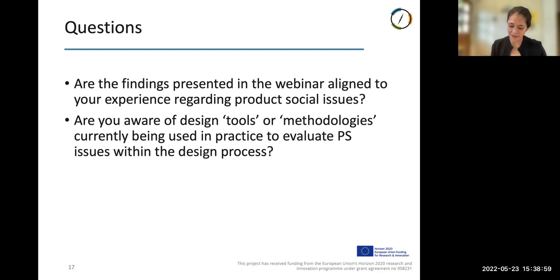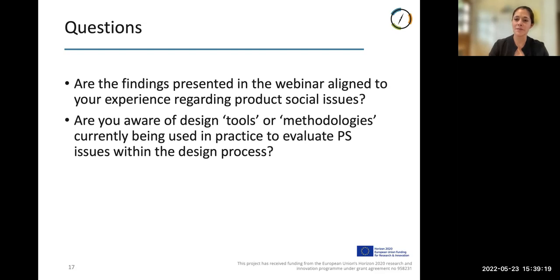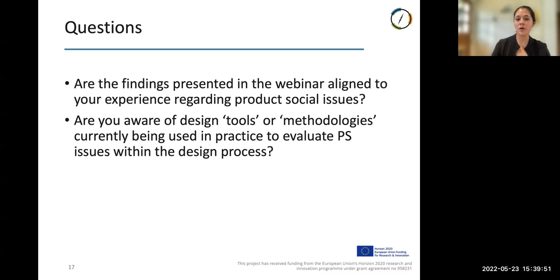It goes back to product circularity considerations. The findings could potentially have been different had we spoken to supply chain management or procurement, or CSR. Most of what was understood as product social considerations during the interviews came from a supply chain perspective, with a handful relating to design for inclusivity — which is primarily a design and development decision — such as including accommodations for motor impairments while maintaining health and safety requirements.